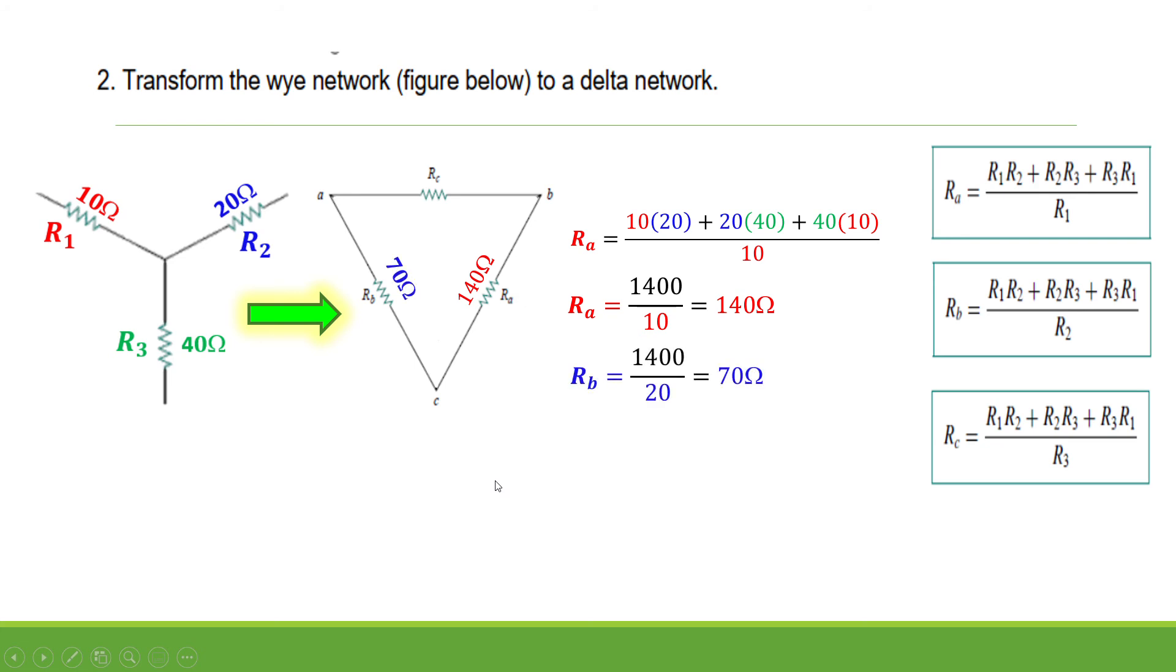In solving for R sub B, you will use the divisor, the opposite value, which is R sub 2, that equals 20. So that is 1,400 divided by 20 Ohms, that equals 70 Ohms for R sub B. And R sub C, likewise, you have to divide it by the opposite resistor, which is 40 Ohms, and you will get 35 Ohms.